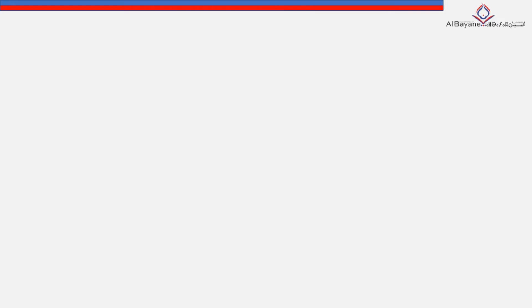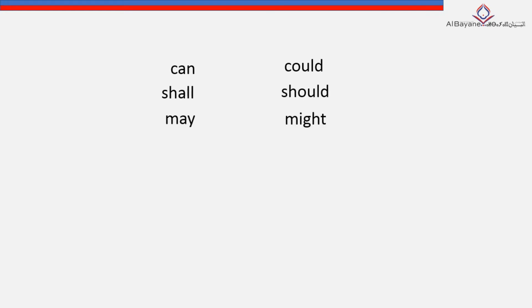Modal verbs are auxiliary verbs, just like be, do, and have, because they work together with the main verb. And modal verbs are: can, could, shall, should, may, might, will, would, must, have to, ought to, and need.